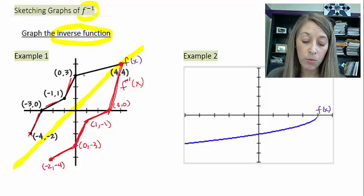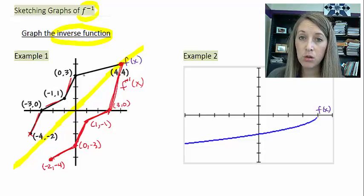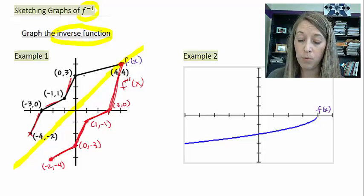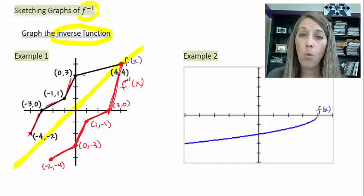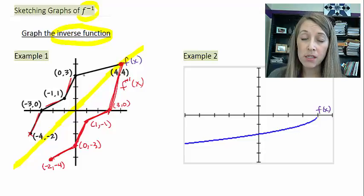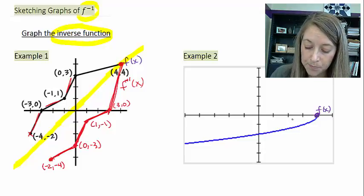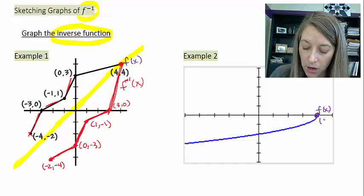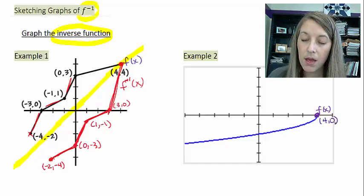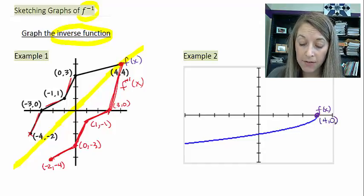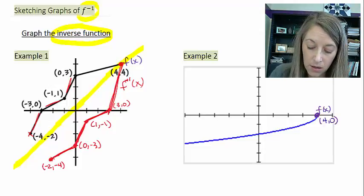Now example one was really easy because they specified points for us. Example two might be a little more difficult because they don't have any points specified. So what I suggest for you to do is define some of your own ordered pairs of the original function first, and then reflect those next. If I define a point here at (4, 0), then my inverse would be graphed at (0, 4), which is here.